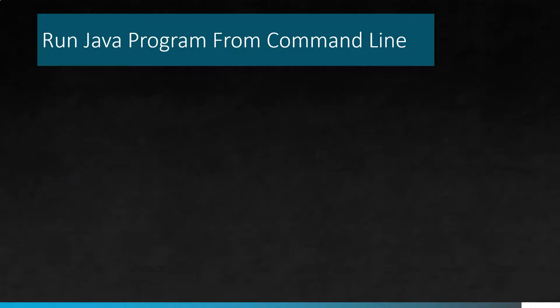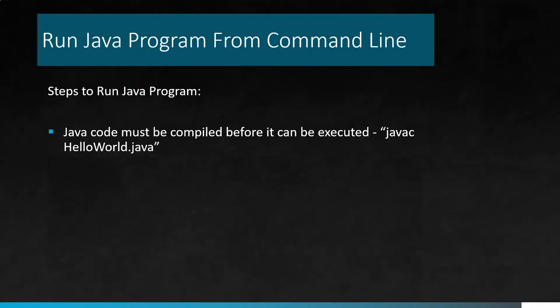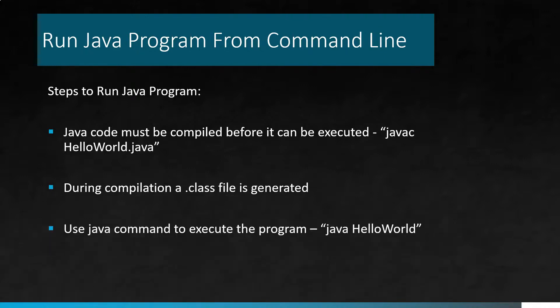In order to run the Java program from the command line tool we need to follow a few steps. Every Java code must be compiled before it can be executed. To compile a Java program use the command 'javac' followed by the program name, which is HelloWorld.java. During compilation it will create a .class file, and then we can use the command 'java' to execute the program — type 'java HelloWorld' and it will give you the desired output. This is how you can execute a Java program from the command line in Windows.